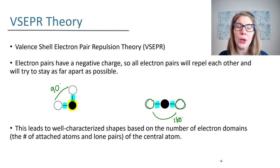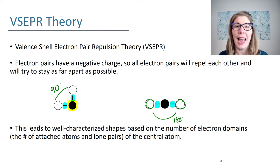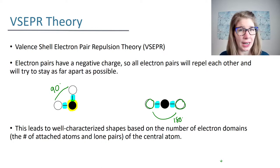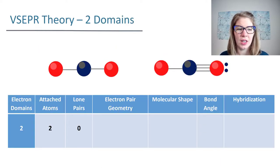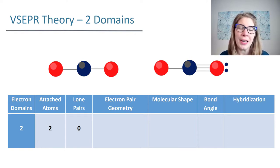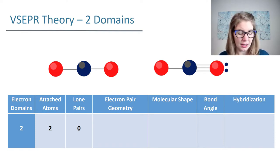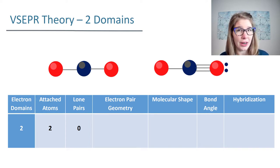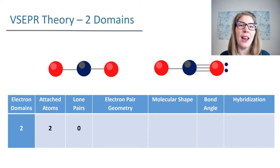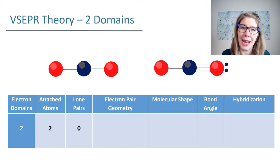We're going to go through the first couple of shapes — two, three, and four electron domains — because that's what we usually cover in organic chemistry. Electron domains are just groups of electrons; they're a location where electrons live. Some people call them electron sets, some call them the steric number. No matter what you call them, they are areas where electrons live.